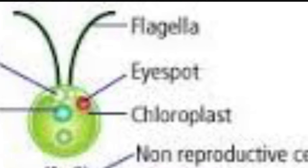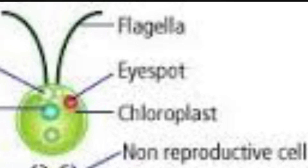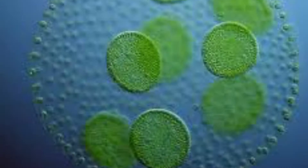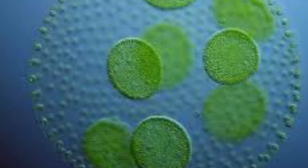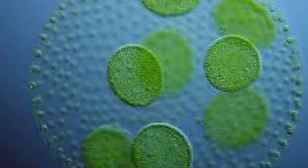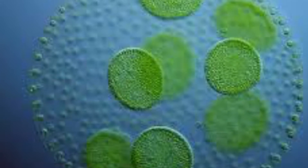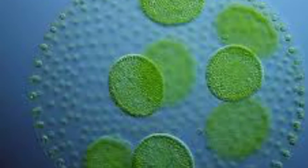How it gets food and energy: they are autotrophic and heterotrophic. Autotrophic means they make their own food through photosynthesis. Heterotrophic means they eat other organisms and find food while moving through water. They use the red eye spot to find light.